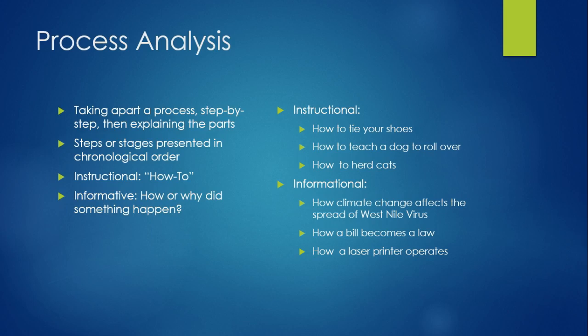Process analysis is the classic how-to essay. In a process analysis essay, you take a process apart step by step and then explain the parts. You present the steps or stages in chronological order. It can be used in an instructional mode — how-to — or in an informative mode. It can help you, especially historians, to explore how or why something happened. Some examples of instructional essays might be how to tie your shoes, how to teach a dog to roll over, or how to herd cats. Go to WikiHow and you'll see lots of examples.